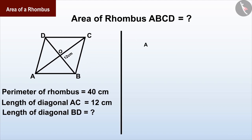AC is perpendicular to BD, and AO is equal to CO, and BO is equal to DO. Can you find the length of AO? Well done! AO will be half of the diagonal AC, that is 6 centimeters.